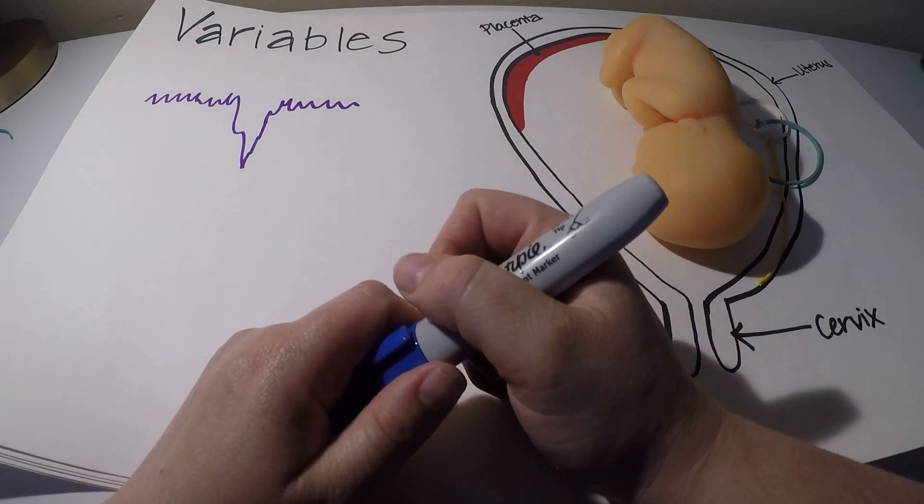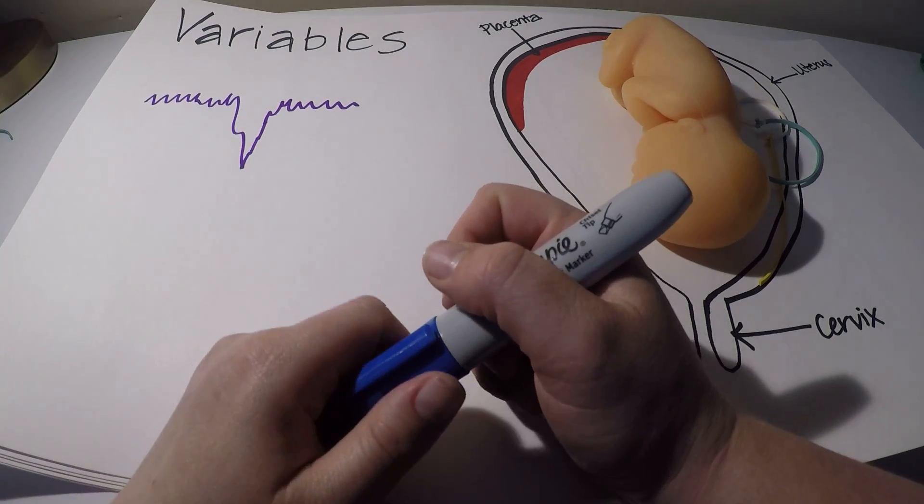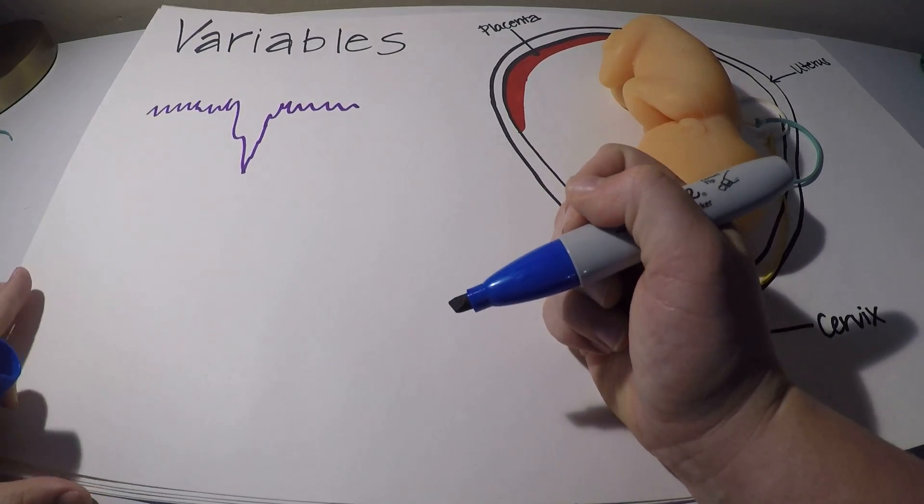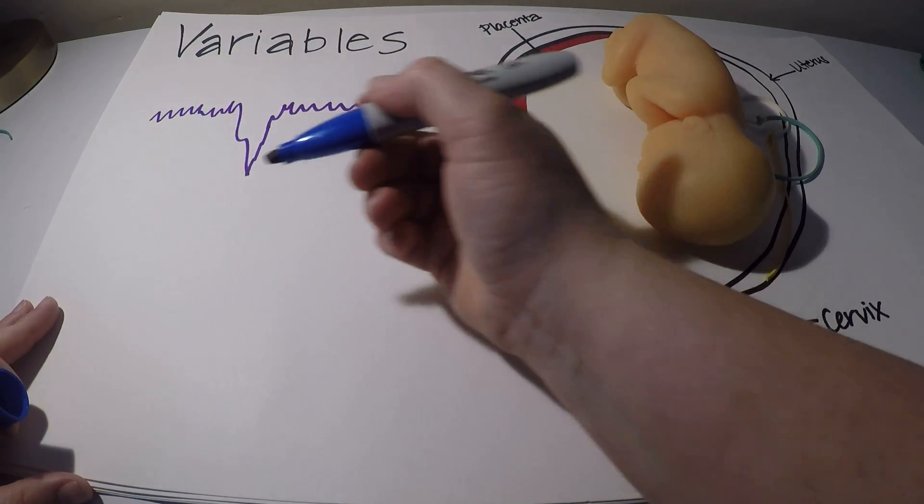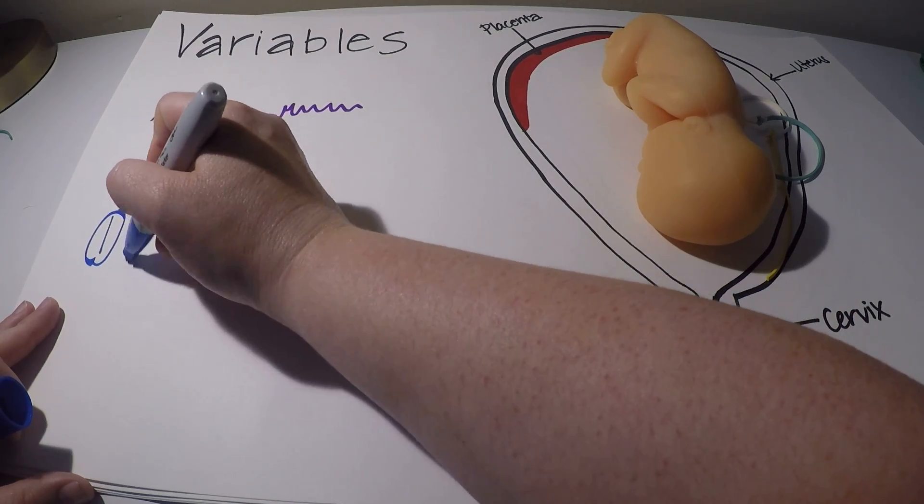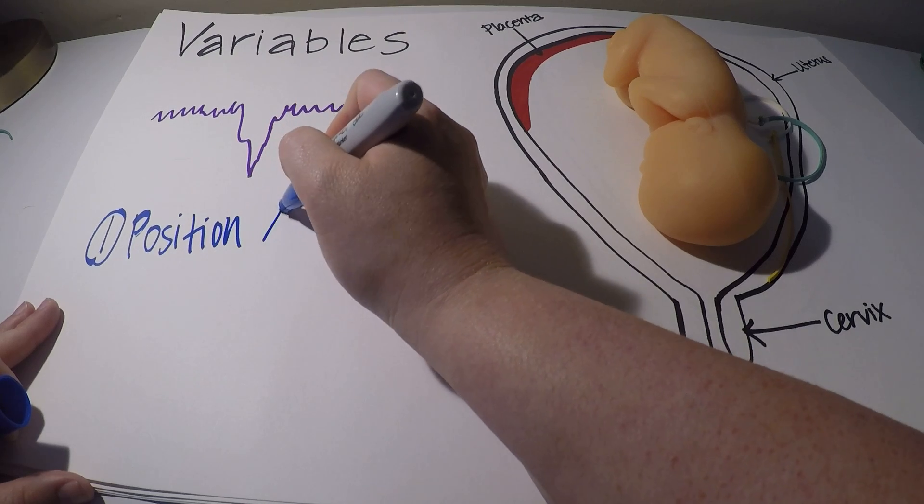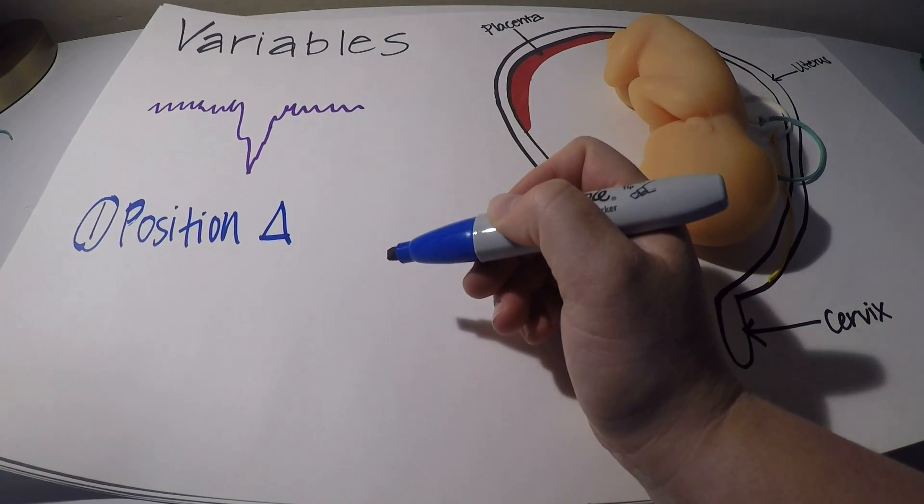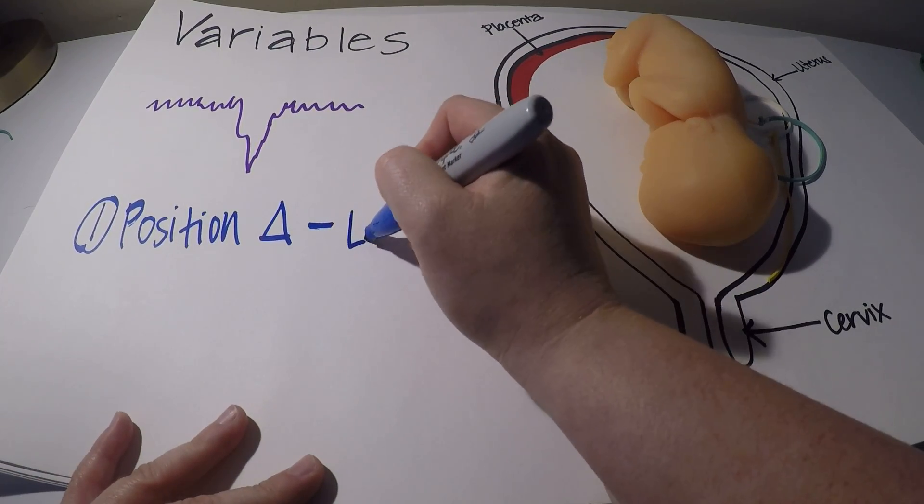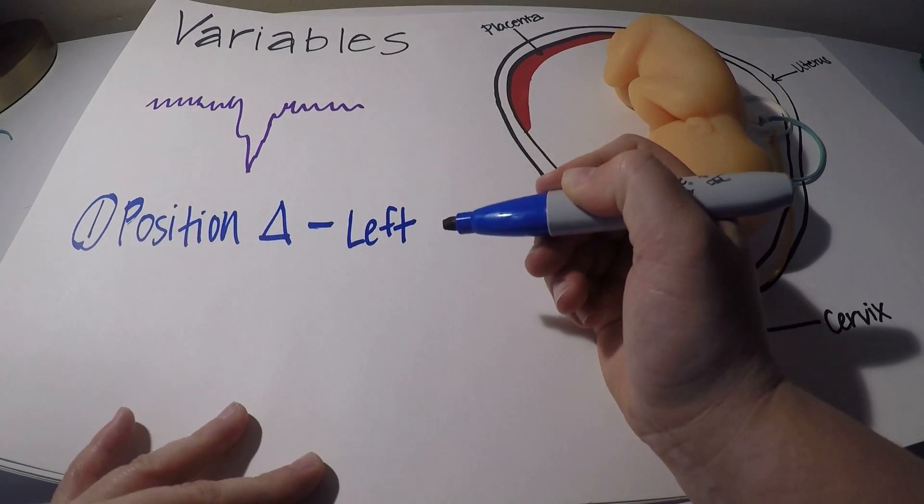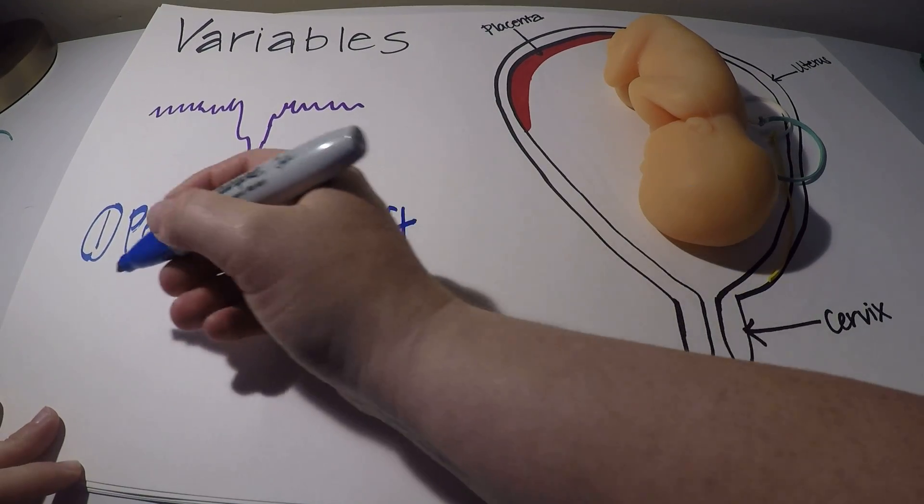Which unfortunately we can't really do much about until baby is delivered. So what are we going to do when mom or baby is having decelerations? Well, the first thing we're going to do is position change. Left is best. So we're going to turn mom to her left side. If she's not already on her left side, that's going to be the first thing we're going to do.